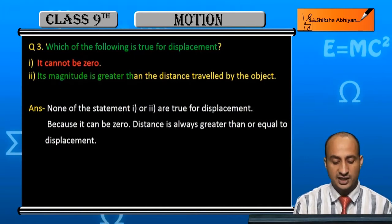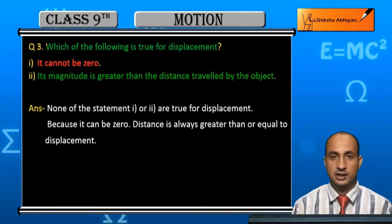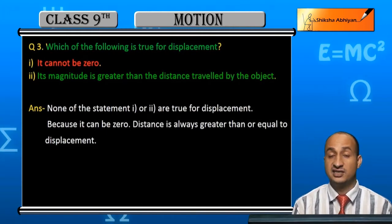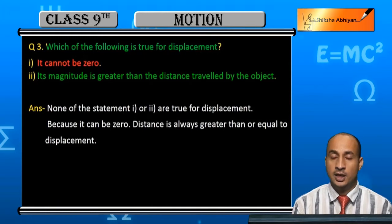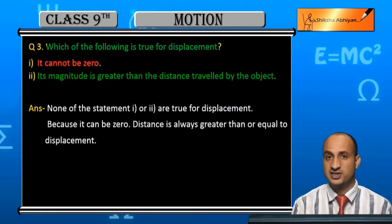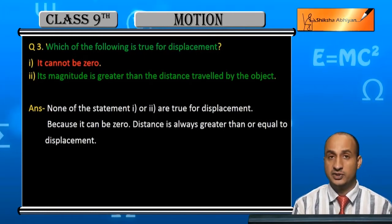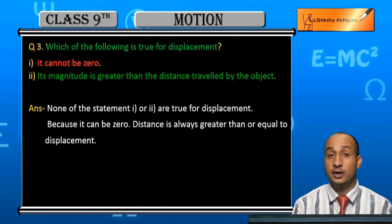The next option: its magnitude is greater than the distance traveled by the object. So, is the magnitude of displacement greater than the distance traveled? Let's evaluate. First, displacement cannot be zero — what about this?